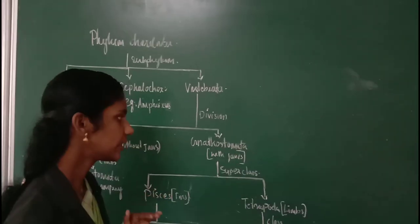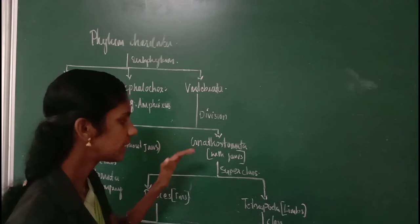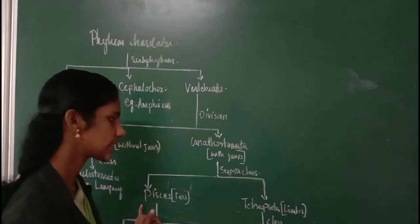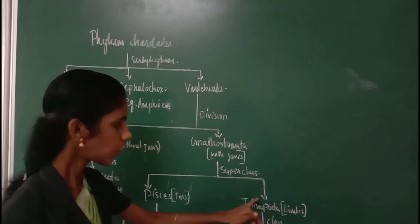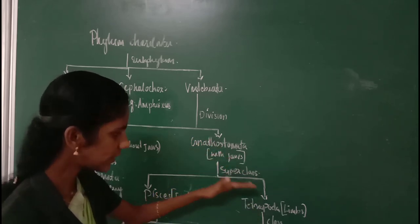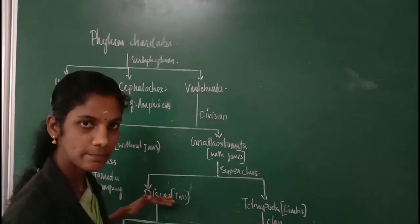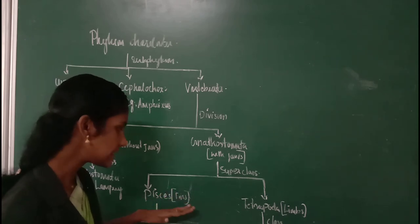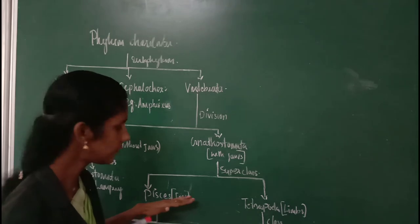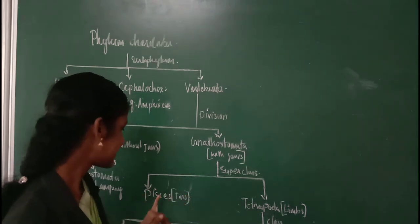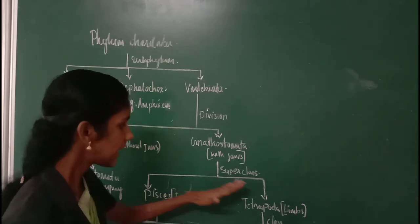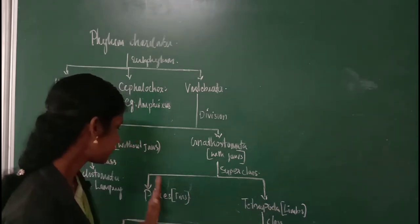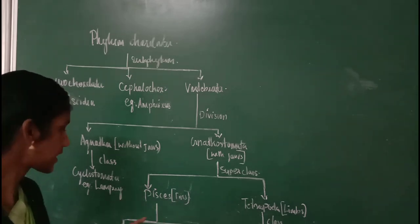Gnathostomata contains vertebrates with jaws. This vertebrate with jaws can be divided into two categories — Superclass Pisces and Superclass Tetrapoda. Gnathostomata can be divided into two superclasses on the basis of number of limbs or lateral appendages present: in Pisces, lateral appendages are fins, while in Tetrapoda, lateral appendages are limbs.